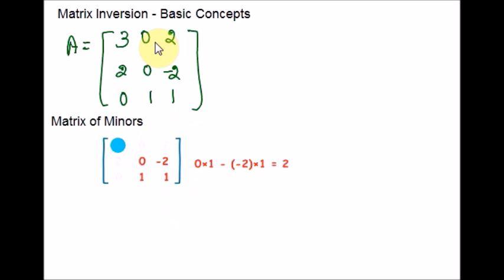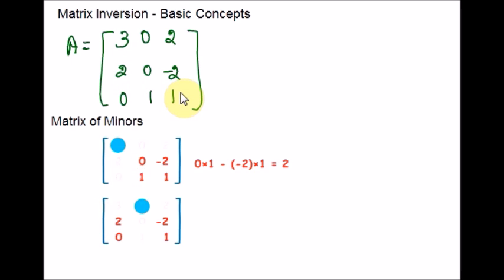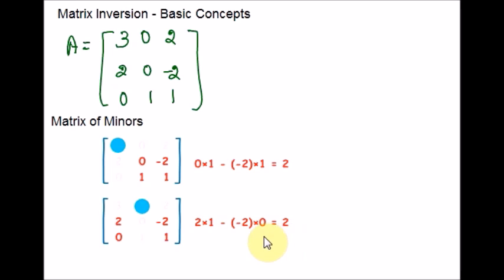For the second value, I ignore that column and row and consider the other numbers. Multiplying in a cross way: 2 times 1 minus 0 times negative 2, which equals 2. For the third value, ignore the first row and third column and consider only that portion: 2 times 1 minus 0 times 0. Then continue in the same way for the second row and third row as well.